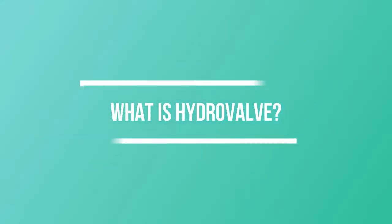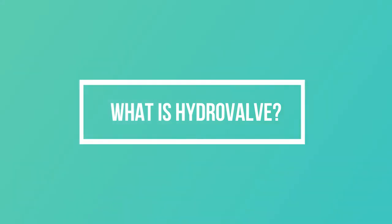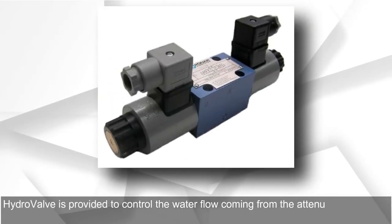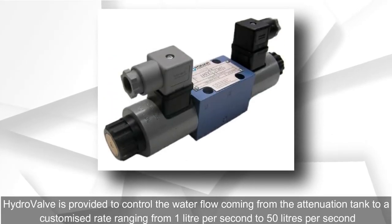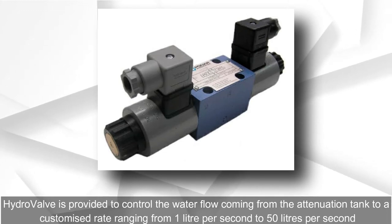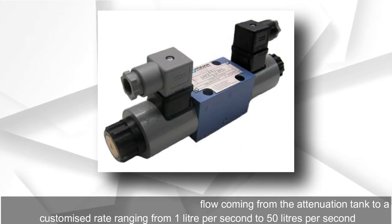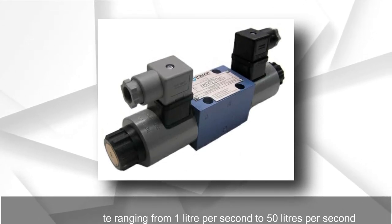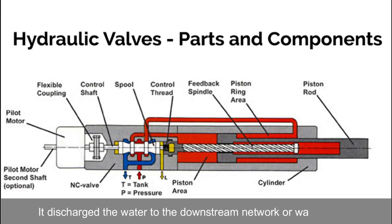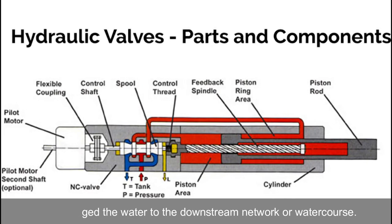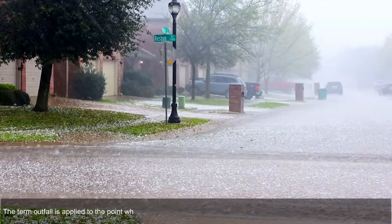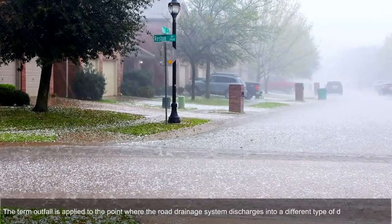What is a hydro valve? A hydro valve is provided to control the water flow coming from the attenuation tank at a customized rate ranging from one liter per second to 50 liters per second. It discharges the water to the downstream network or watercourse.